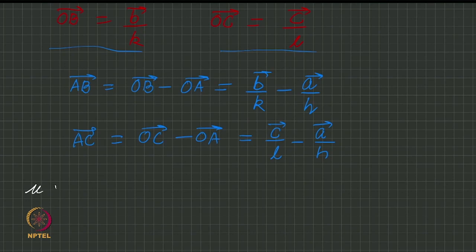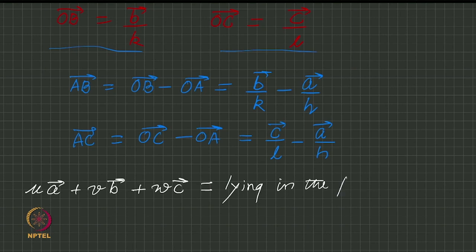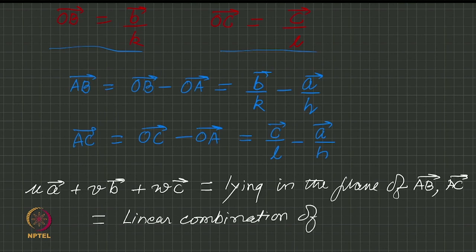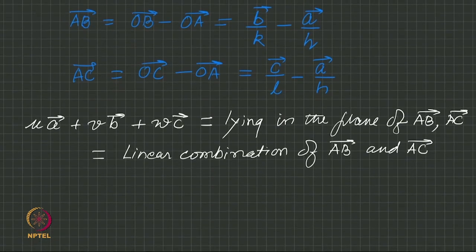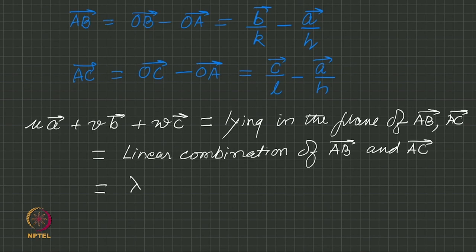So, uA + vB + wC, since it is lying in the plane, this vector should be a linear combination of AB and AC, which means some lambda times AB plus mu times AC should give me the same vector.